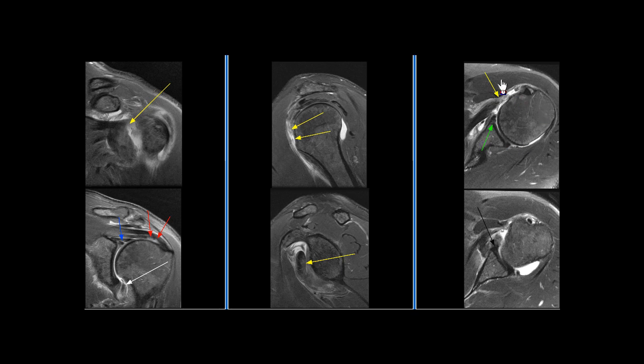There is complete tear of the distal subscapularis tendon. The tendon is retracted mildly to the level of the glenoid rim.